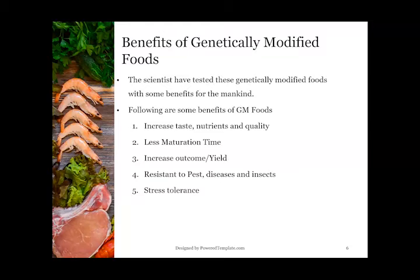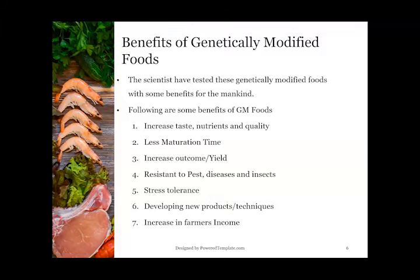Stress tolerance: the DNAs of the particular crop or organisms are modified in such a way that they become stress tolerant in terms of any sort of weather effects — calamitous conditions or natural calamities against which the organisms become tolerant. Developing new products or techniques: after genetic modification, foods can be developed with new products or new techniques.